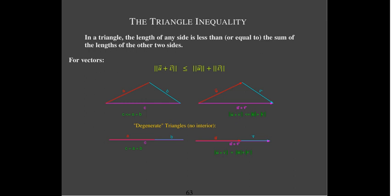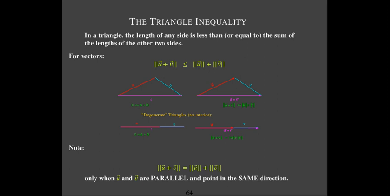Taking the lengths of each of those vectors, the length of u plus v should be less than or equal to the length of u plus the length of v. Equality holds only when u and v are parallel and point in the same direction — that is, v doesn't go in the opposite direction — so the length of u plus v equals the length of u plus the length of v only when u and v point in the exact same direction.